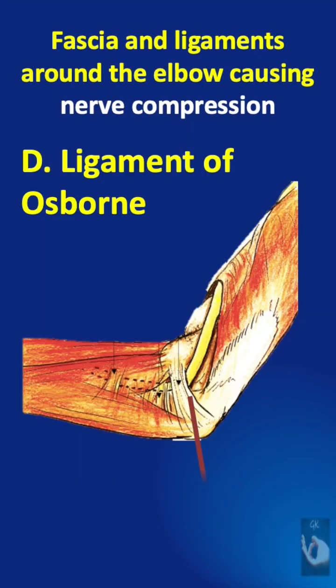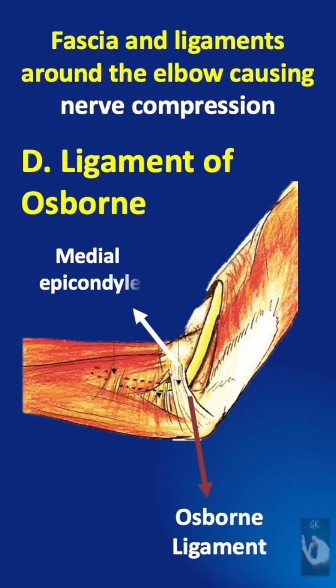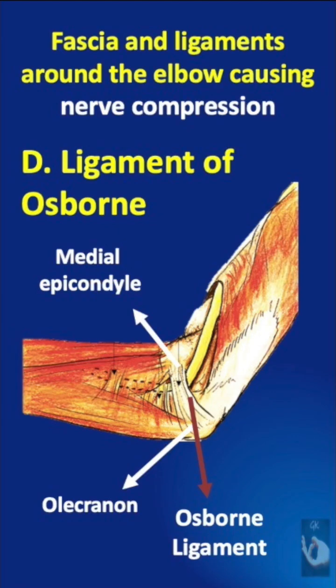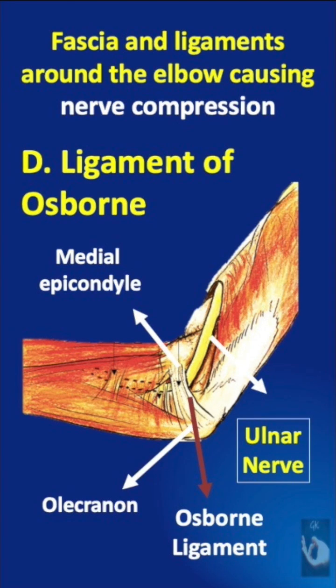The Osborne ligament is a fibrous band of tissue that spans the space between the medial epicondyle and the olecranon. It forms a roof over the cubital tunnel and is a common site for ulnar nerve compression, leading to symptoms of ulnar neuritis.